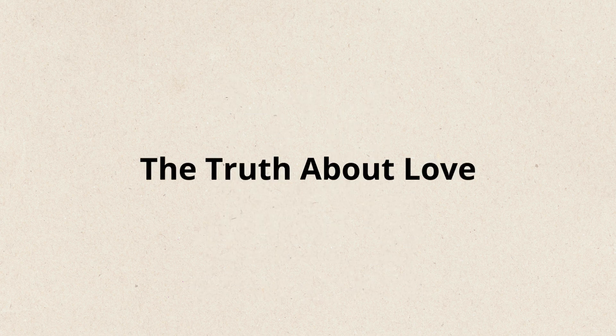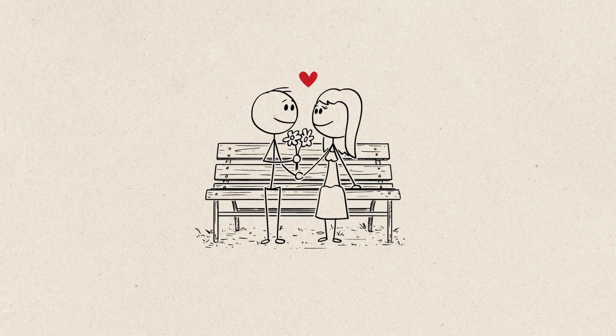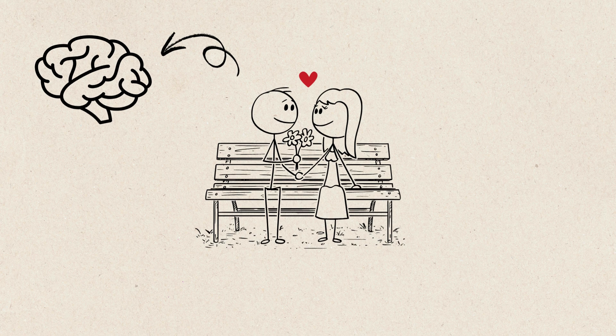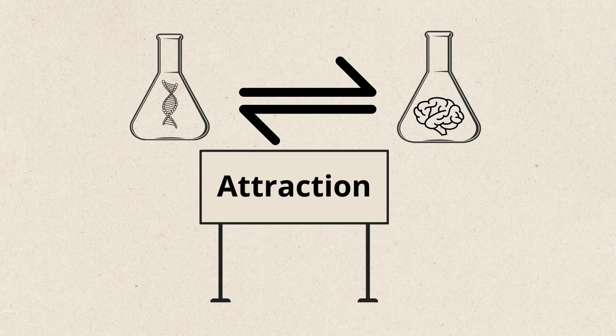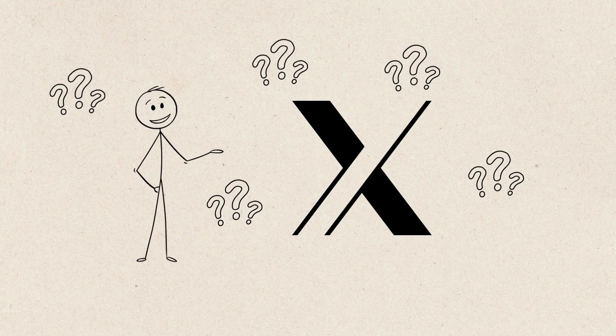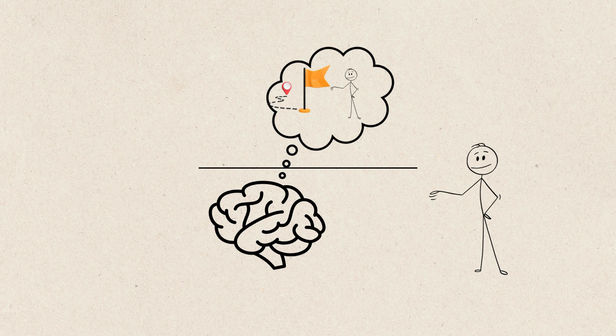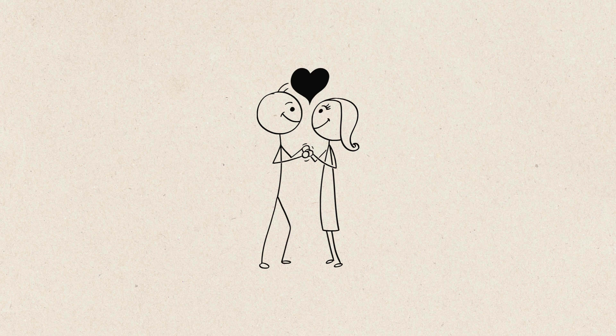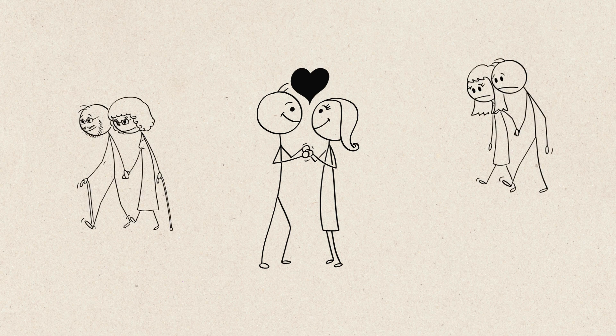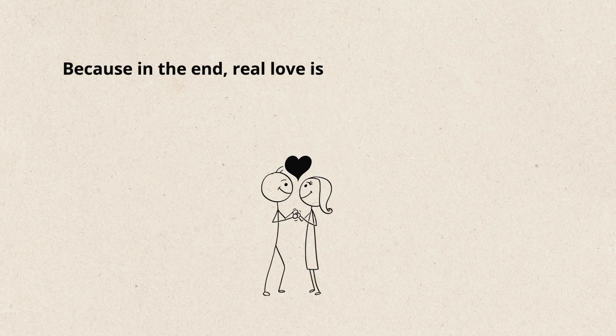The truth about love. So, the next time you find yourself falling for someone, remember your brain is the mastermind behind it all. Attraction is a mix of biology, psychology, and that mysterious X Factor that makes love so unpredictable. But here's the real takeaway. Your brain might start the process, but what happens next is up to you. Love isn't just about who your brain picks. It's about how you build, nurture, and grow that connection over time. Because in the end, real love isn't about chemistry. It's about choice.